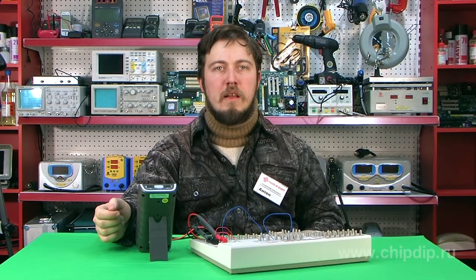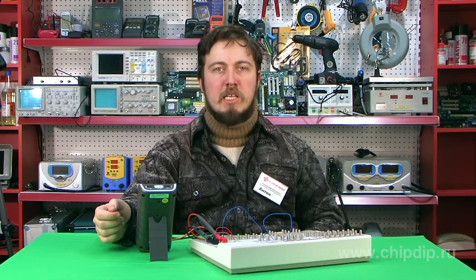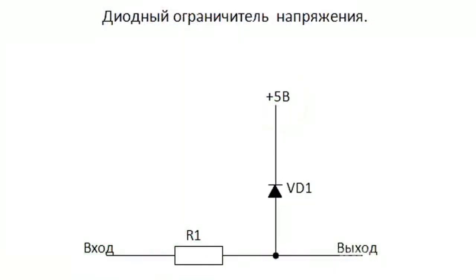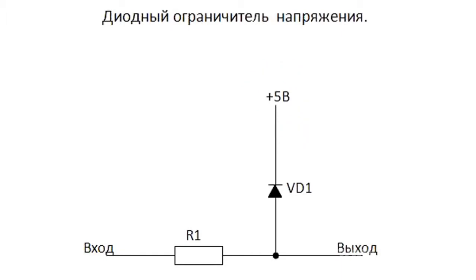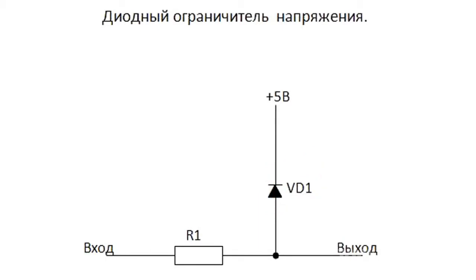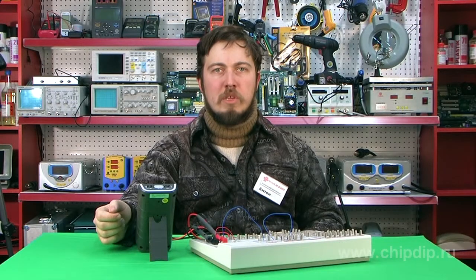Diode-limiter circuits come in handy when there is a need to limit or clip the signal range or save voltage. Diodes help to give the output voltage within the value of a total of the voltage applied to the diode's cathode and the diode's direct voltage. Diodes do not in any way affect the voltage when the values are lower, including if negative. The only thing is that the negative input voltage should not reach a breakdown voltage value.